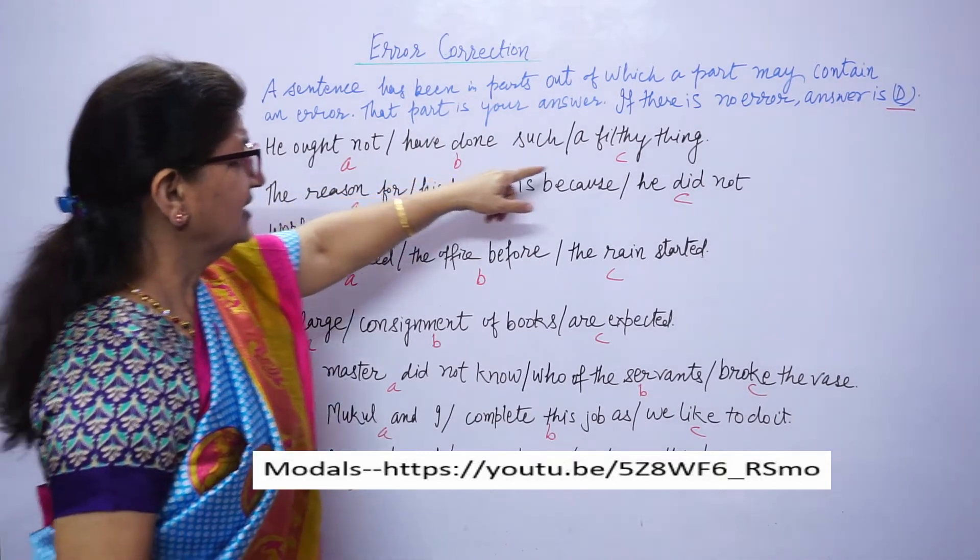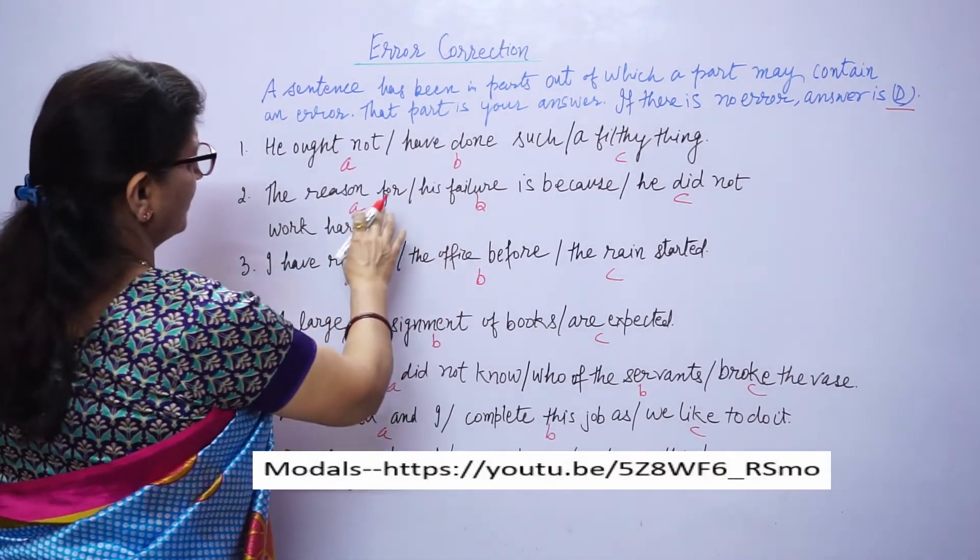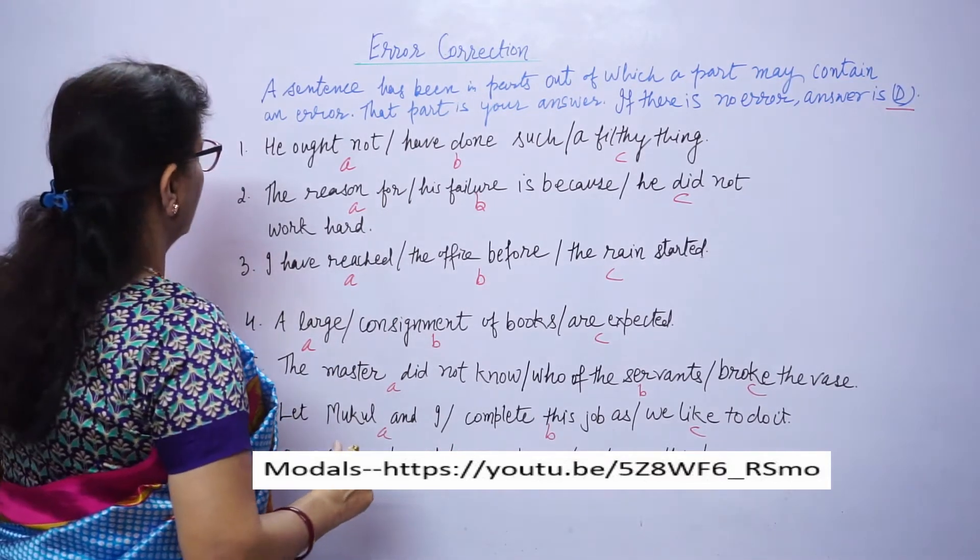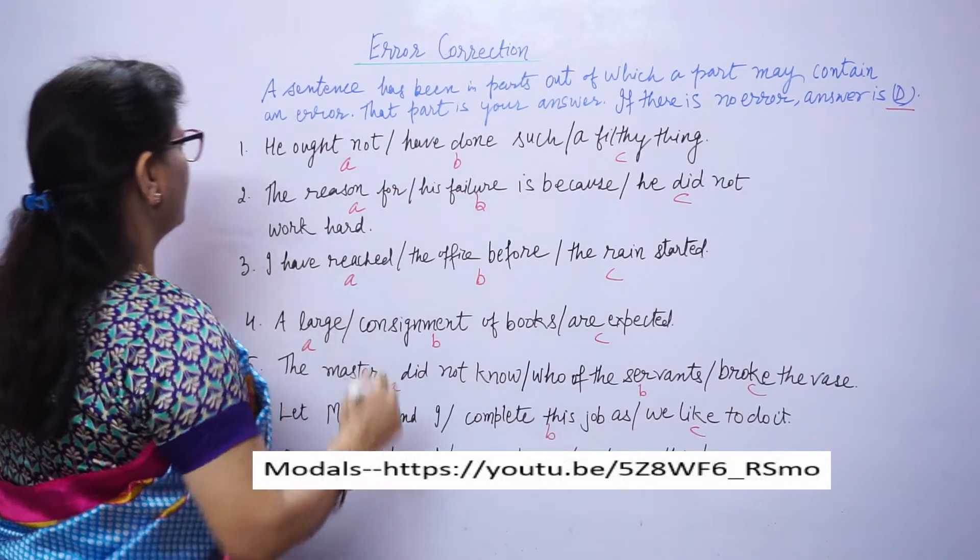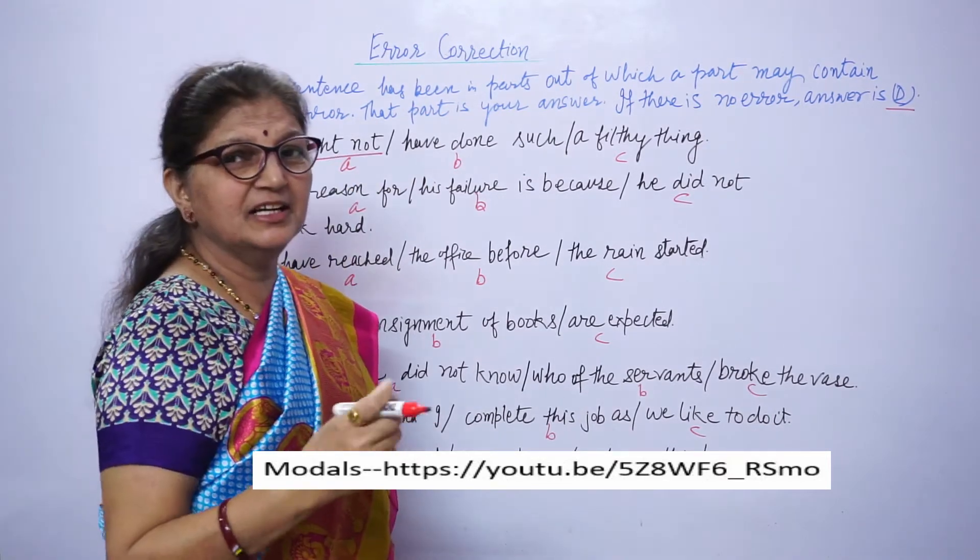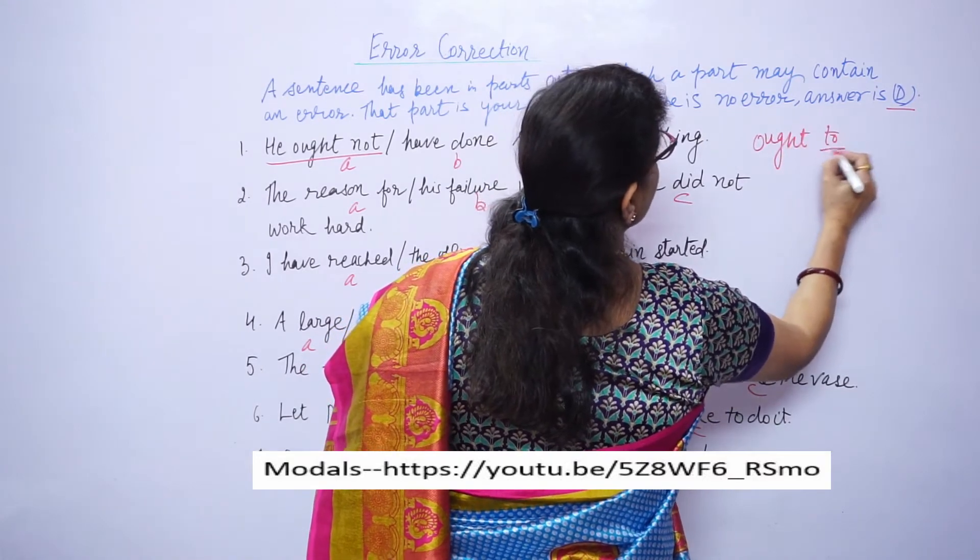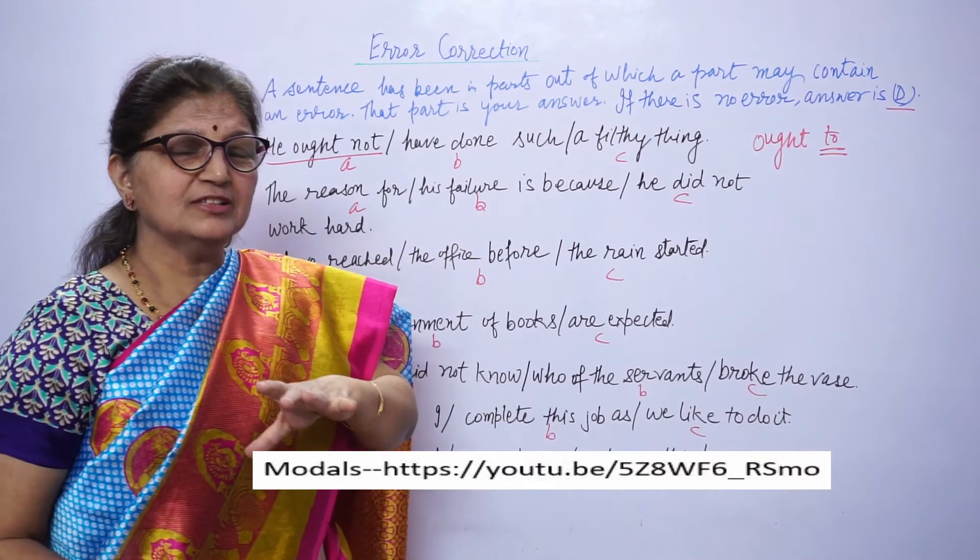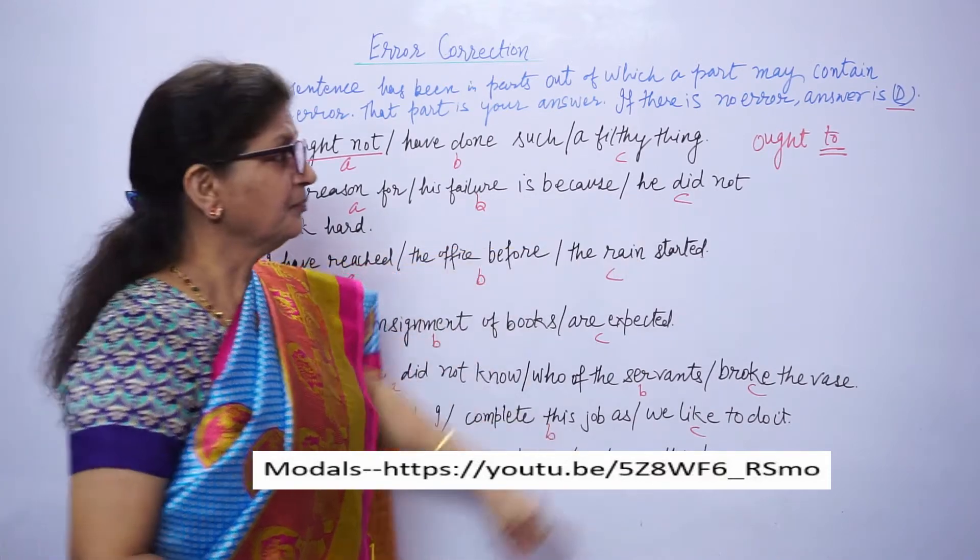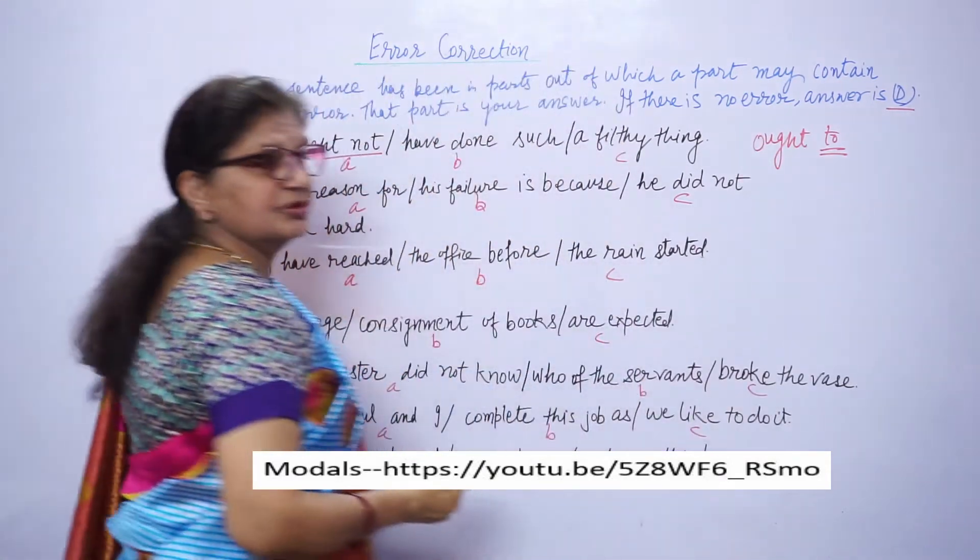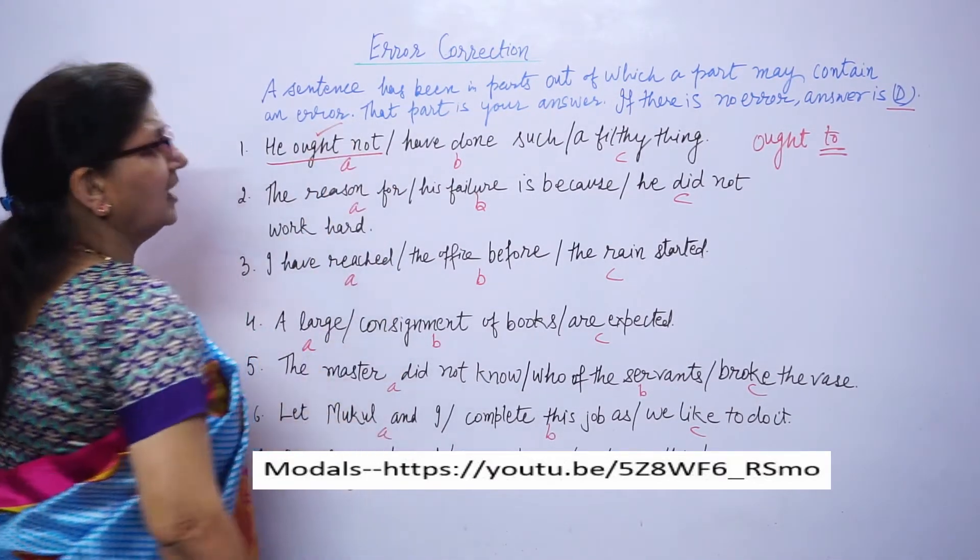First sentence is, he ought not have done such a filthy thing. The mistake is in part A. When we did topic on modal, I told you, with ought, to is used. With other models, only infinitive means first form of verb is used, but when there is ought, to infinitive is used. So your answer will be A.